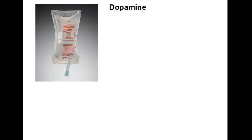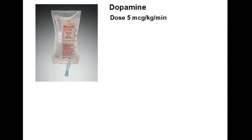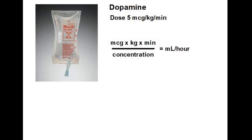Let's do a very simple calculation for administration of dopamine. Say you're working and the doctor gives you an order for giving 5 micrograms per kilogram per minute of dopamine, and you need to figure out how to program your IV pump in order to administer it. The clue as to what calculation you're going to perform is contained right in the order itself — we're going to use the mcg/kg/min calculation.